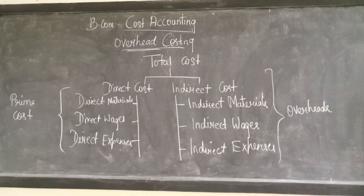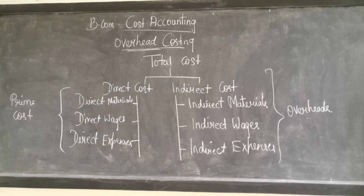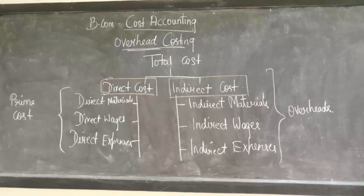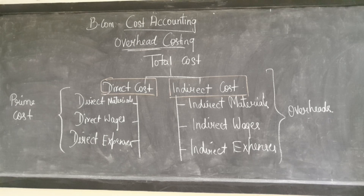We all know that while manufacturing a product, we finally get a total cost. This total cost is divided into two segments: direct cost and indirect cost.